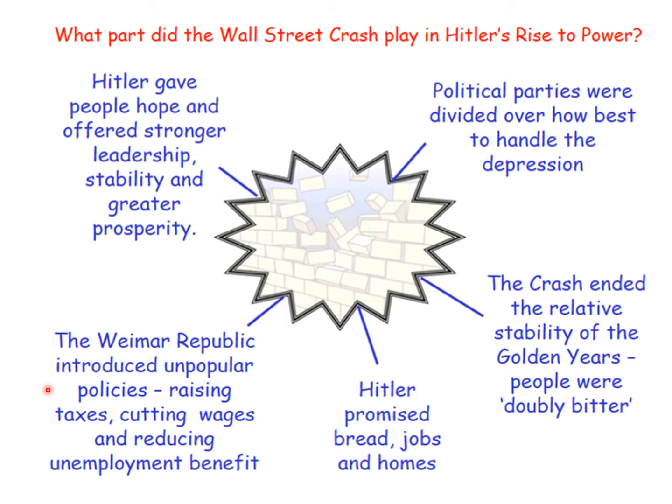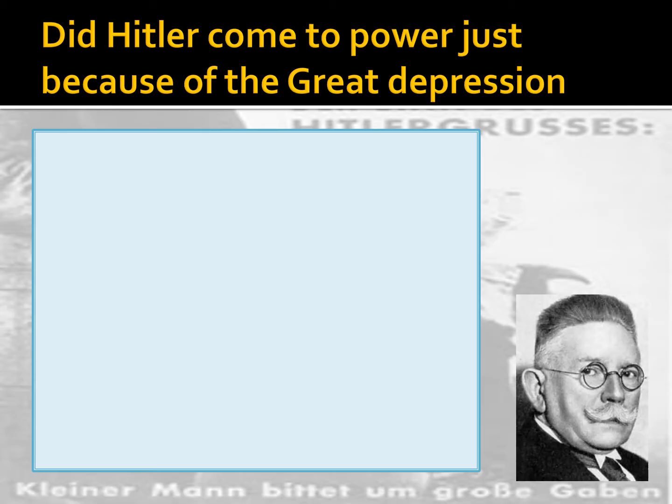Hitler was promising bread, jobs and homes to these starving, unemployed and homeless people - promising easy solutions to the difficult problems they were facing. He gave hope and offered strong leadership, stability and greater prosperity to the people. It is no wonder that the Nazi party quite quickly became the most popular party in the Reichstag at this point in time.